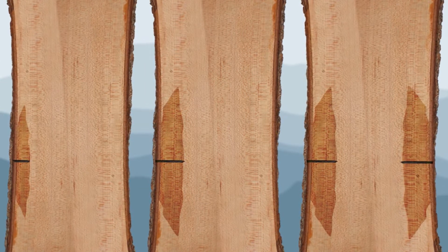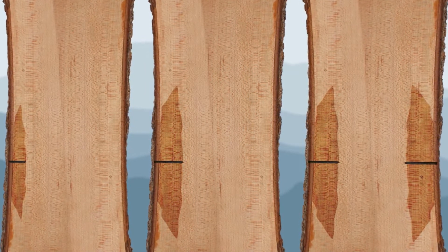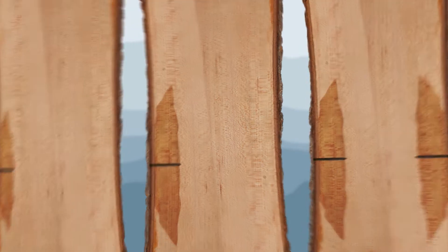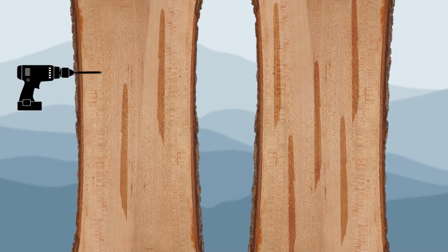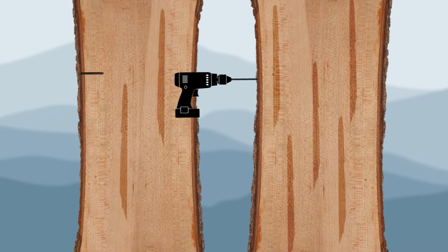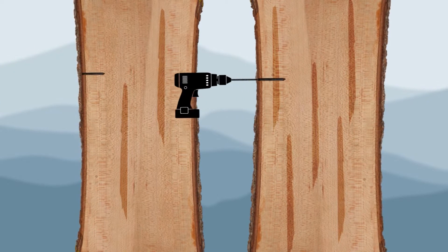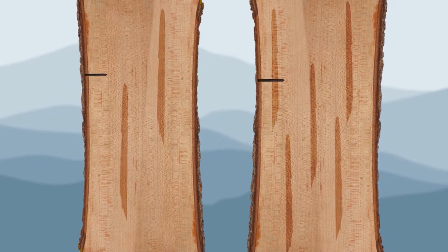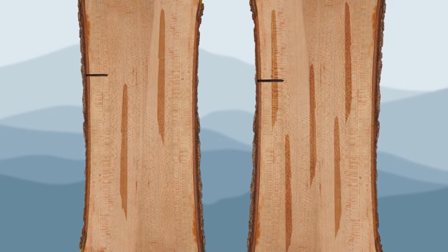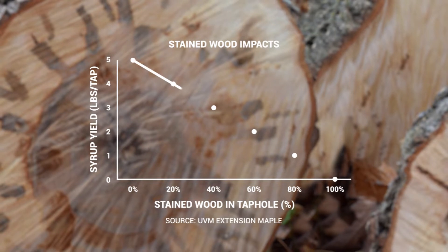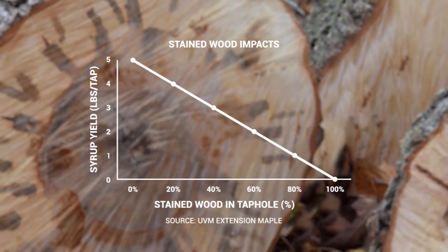So while deeper, wider tapholes and more tapholes per tree will result in higher yields, they'll also generate more non-conductive wood. The greater the amount of non-conductive wood in the tapping zone, the greater the chances of hitting it when tapping. For example, if 20% of the tapping zone is non-conductive wood, there's a 20% chance of drilling into it when tapping. So if non-conductive wood accumulates to high levels over time, the chances of hitting it increase.